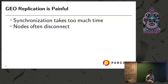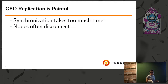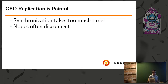With geo replication — servers in different countries or cities — synchronization will either take a long time and your applications must wait, or nodes may frequently disconnect. Exchanging data between data centers is more error-prone than exchanging data within a single data center.